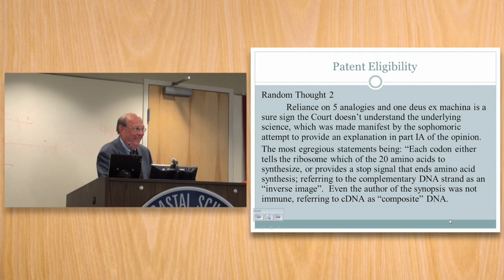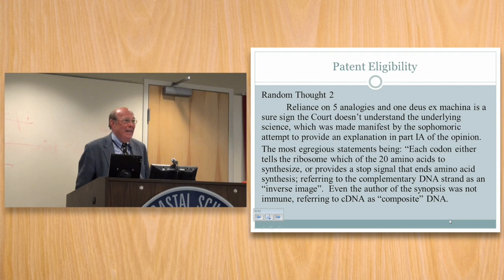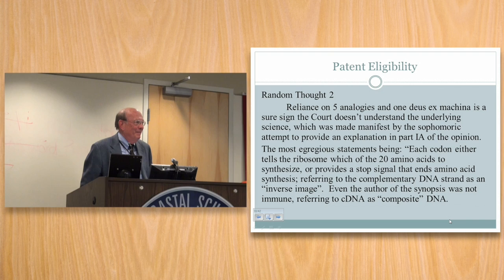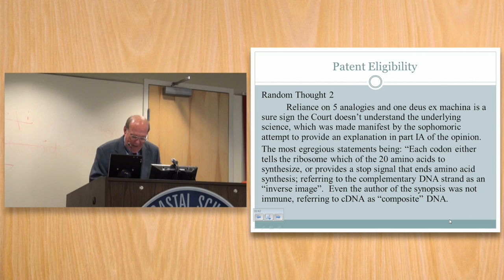The analogies were: DNA is like a tree in a forest — leaves aren't patentable, but the sap might be if it's concentrated. A baseball bat carved out of a tree would be patentable. A statue carved out of marble might be a subject of copyright but not a patent. A cooking recipe might be patentable as a method, but flour, eggs, and salt — not so much. A kidney isolated from the body might not be patentable.